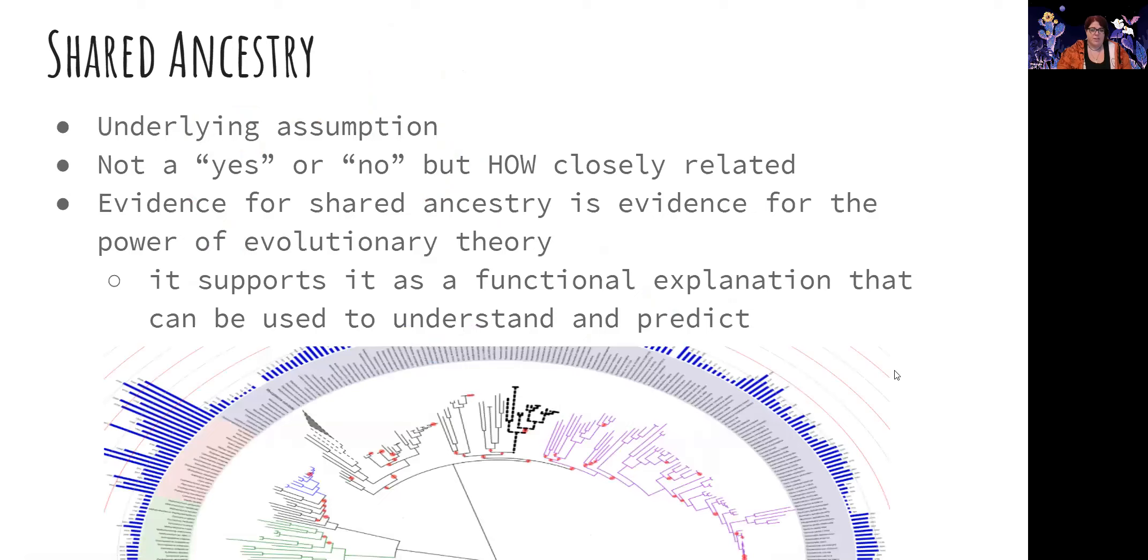Shared ancestry is actually an underlying assumption of evolution. So it means that we assume that all organisms at some point shared a common ancestor. This isn't really a yes or no question of did we share a common ancestor, because we're assuming yes, but what we look at is to what extent do we have a recent common ancestor. So evidence for shared ancestry is actually the evidence of how evolution works as a theory. It supports it as a functional explanation and we can use it to understand and predict things into the future.